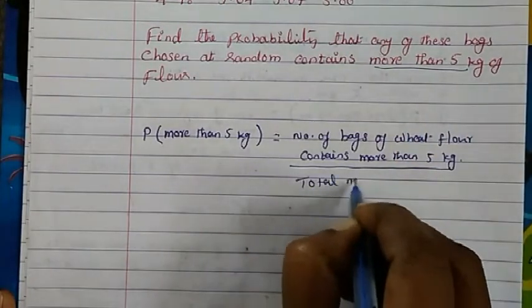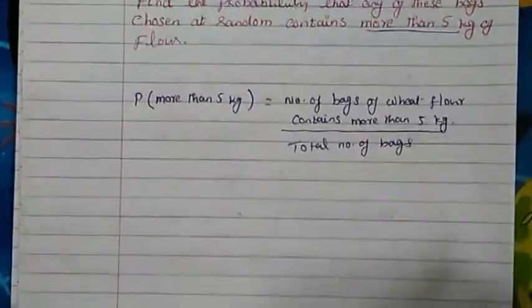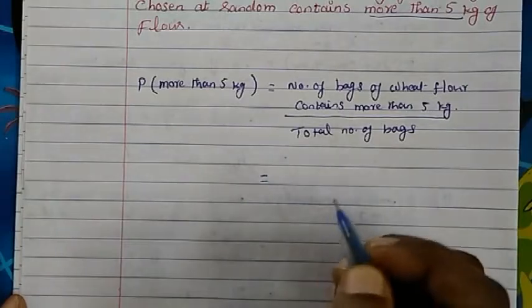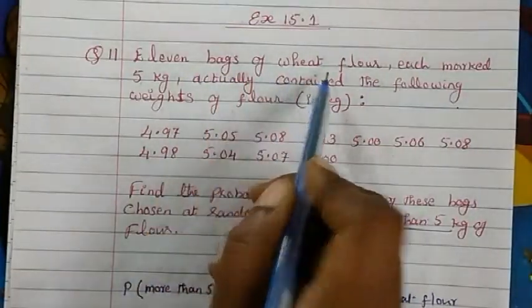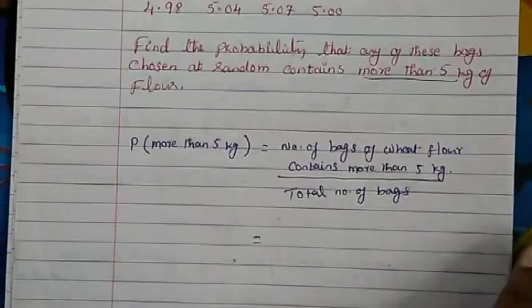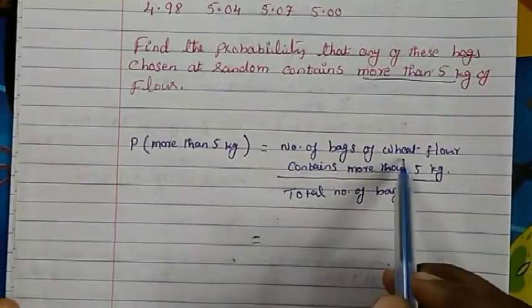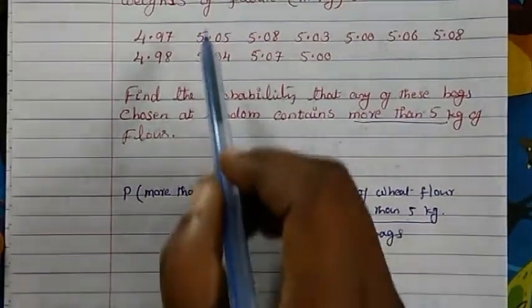Then total number of bags. So what will be the one? Total number of bags given to us, that is 11 bags of wheat flour. So total number is 11. Now, more than 5 kg, let's see.